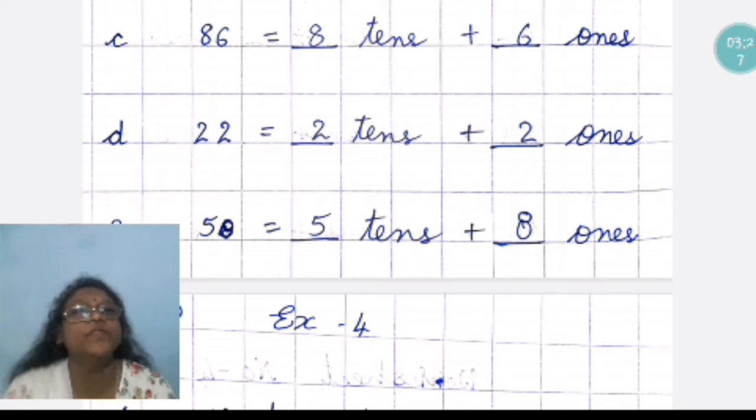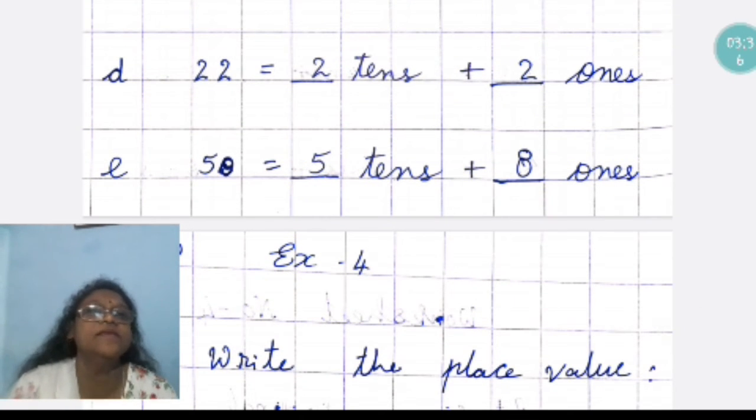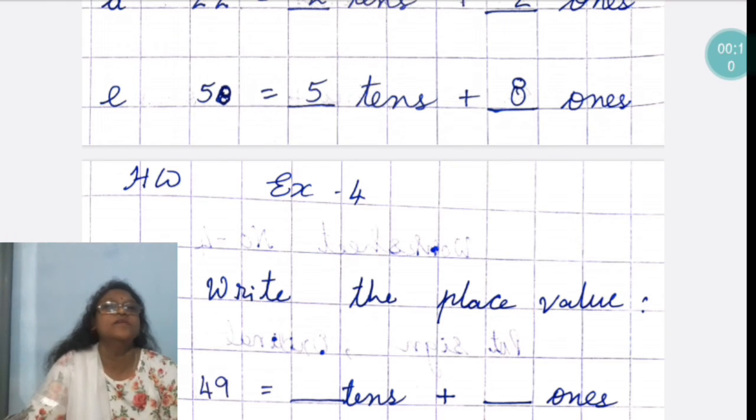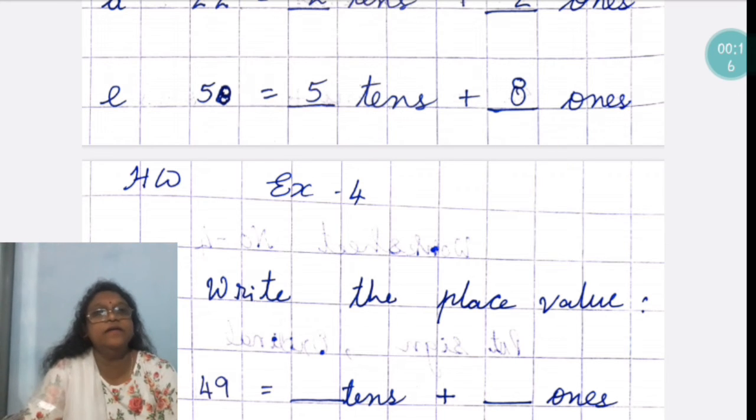22. So, both are ones and tens, both are 2. But, the figure on the right side we will write ones place and on the left side we will write tens. Now, 58. So, 8 we will write on the ones and 5 on the tens side.